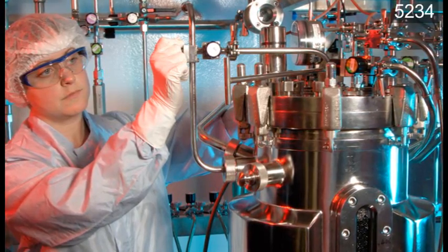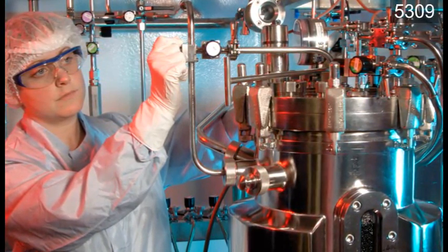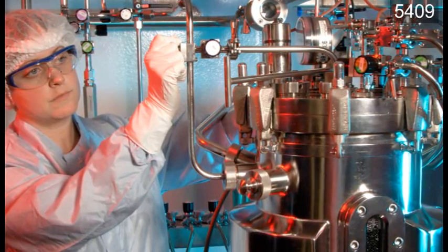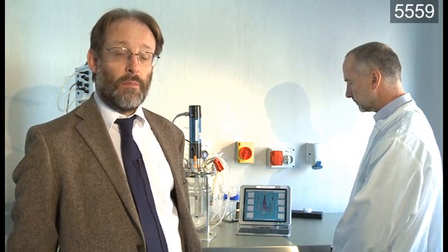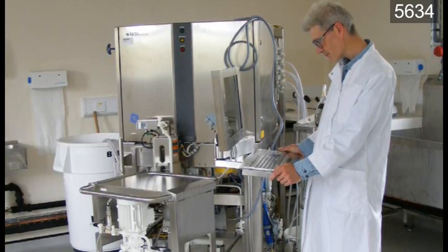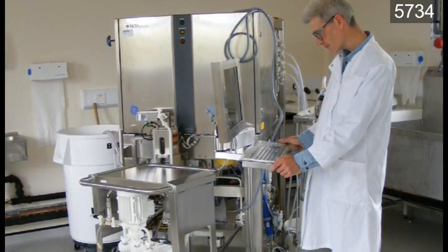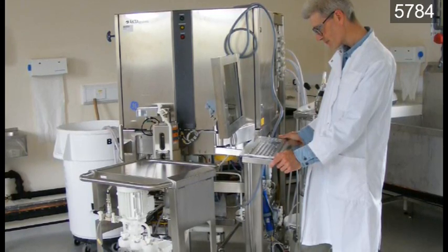Once we've established fermentation conditions, what we then have to do is look at how we purify the product of interest. We have an extensive downstream processing capability which we can use to maximise the yield of the product of interest and to increase the purity to levels acceptable to regulators. In the developmental facility, we're aiming to produce a product of high purity and high yield and to consistently produce that.